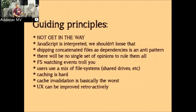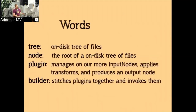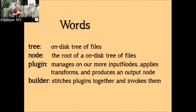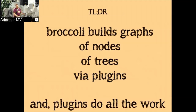Broccoli doesn't meet all those criteria yet, but it's getting there quickly. In the Broccoli world, there are four high-level things that matter: trees, nodes, plugins, and the builder. A tree represents an on-disk tree of files. A node is basically Broccoli's pointer to the root of that file tree. A plugin is how Broccoli applies transformations to nodes. The builder stitches plugins and nodes together transparently.